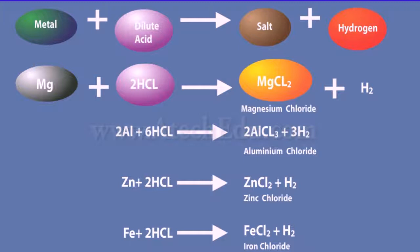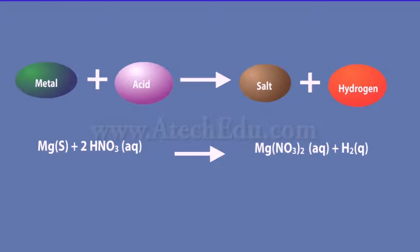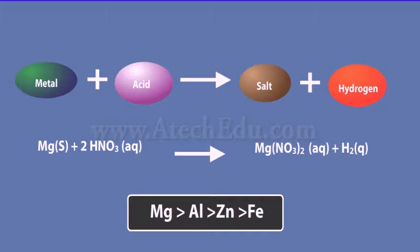Metals react with dilute acid to give salt and hydrogen. Hydrogen gas is released when metals react with dilute hydrochloric acid. Hydrogen gas is not evolved when a metal reacts with nitric acid because HNO3 is a strong oxidizing agent — it oxidizes the hydrogen produced to water and is itself reduced to nitrogen oxides. However, magnesium and manganese react with nitric acid to evolve hydrogen gas. The reactivity of metals with acid decreases in order as shown.